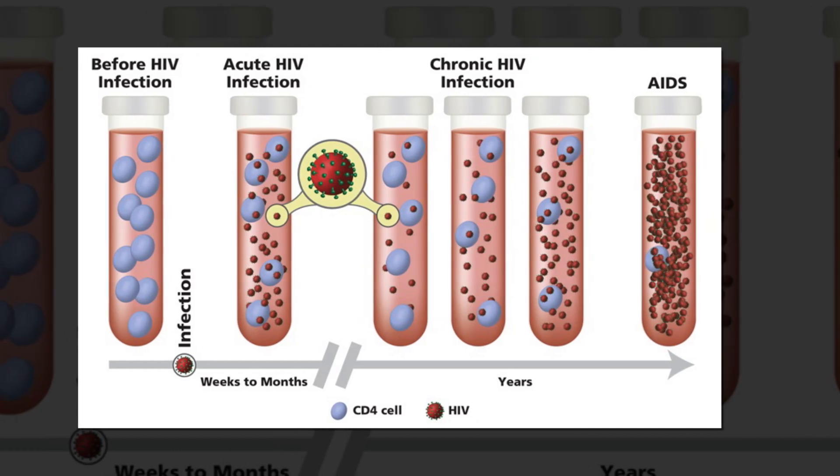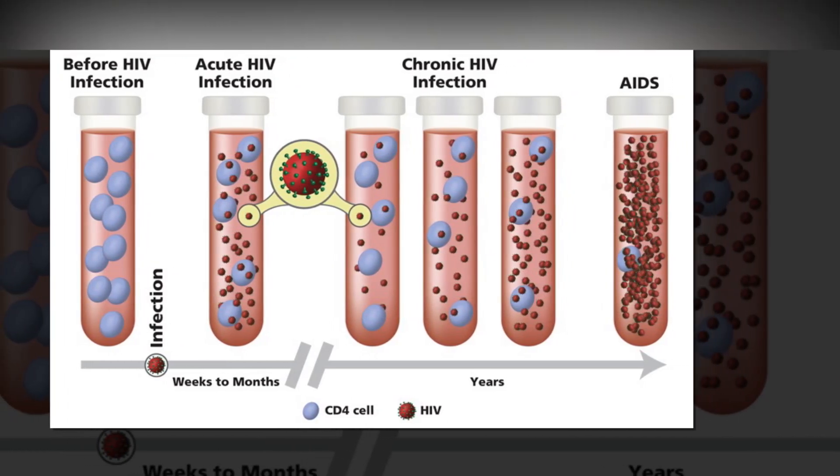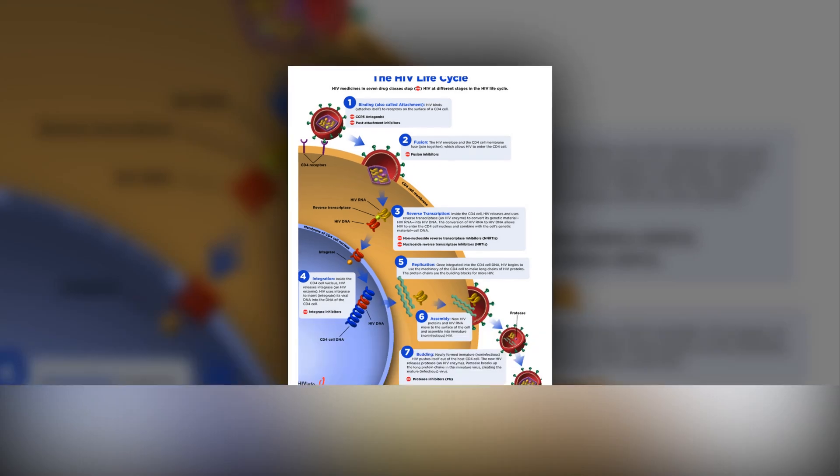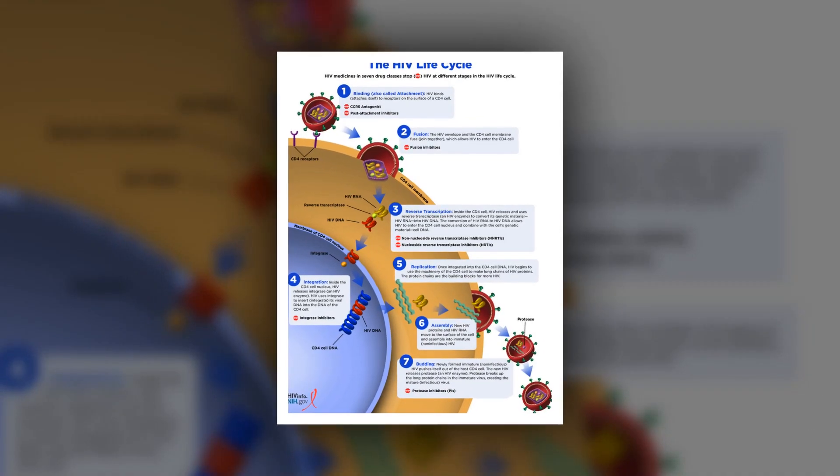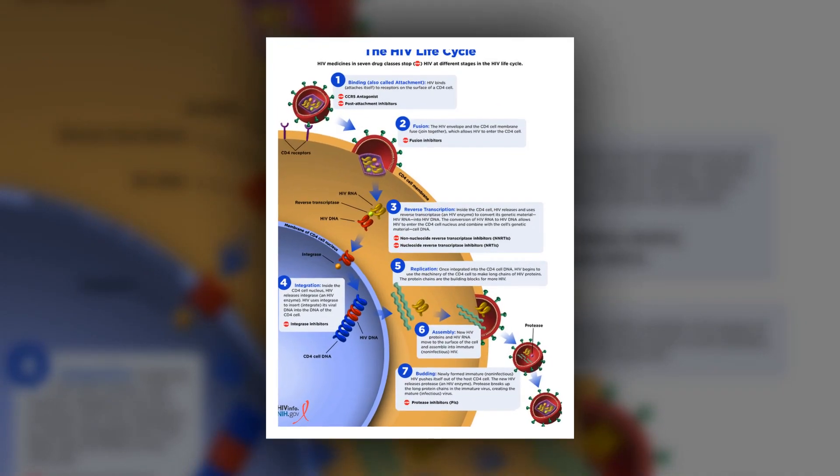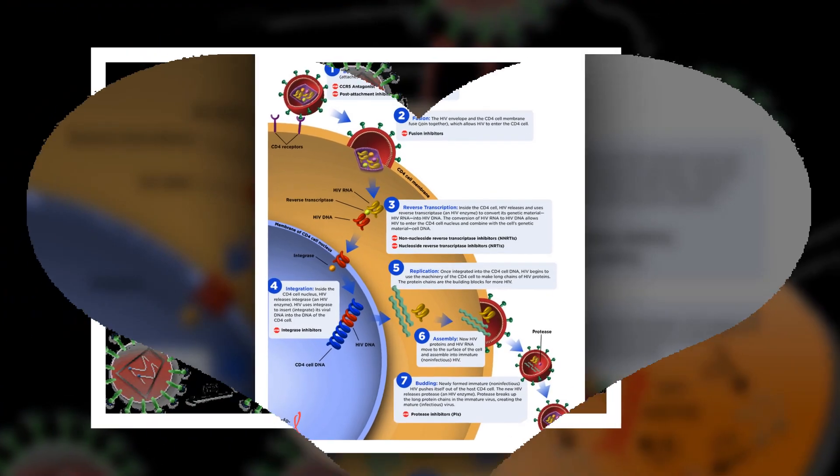Metabolomic analysis revealed that VNPs had lower levels of anthranilic acid, a byproduct of tryptophan degradation linked to immune activation and CD4 T-cell depletion in HIV disease progression.